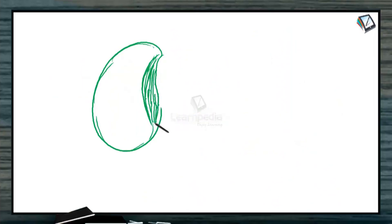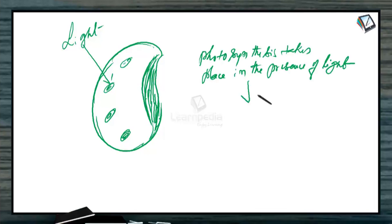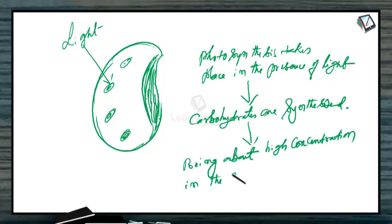This is the guard cell. And one side wall is thick. This has chloroplasts. There is light. And when light falls on the chloroplasts, naturally photosynthesis takes place in the presence of light. The result is carbohydrates are synthesized. These carbohydrates bring about high concentration in the cell sap, provided the carbohydrates are soluble sugars.